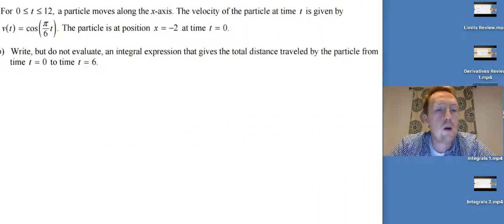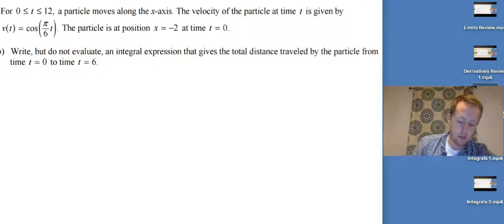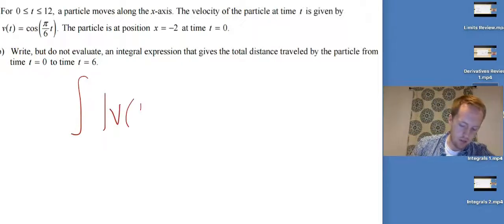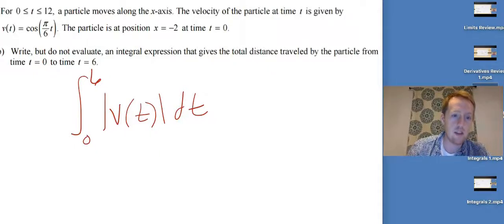For 0 ≤ t ≤ 12, a particle moves along the x-axis with the same velocity function. Write but do not evaluate an integral expression for the total distance traveled from t = 0 to t = 6. That's just the integral from 0 to 6 of |v(t)| dt. That's it — literally that easy.